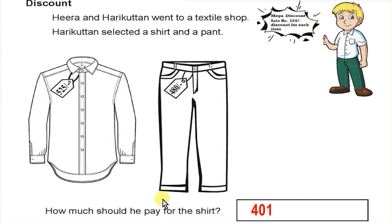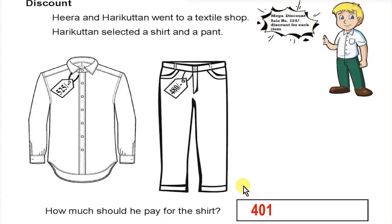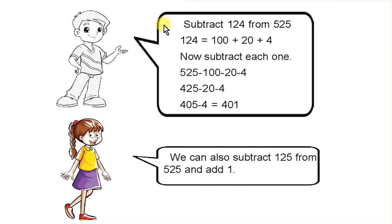How much should we pay after the discount? At the price of $525, we subtract $124. The answer is $401.